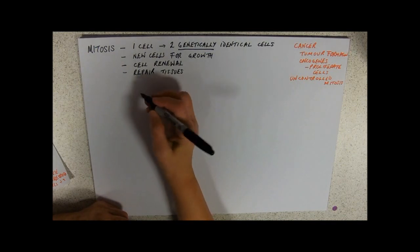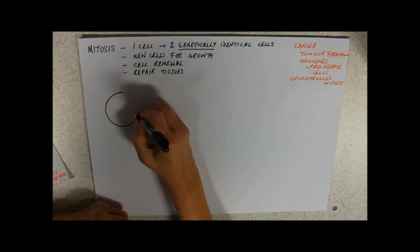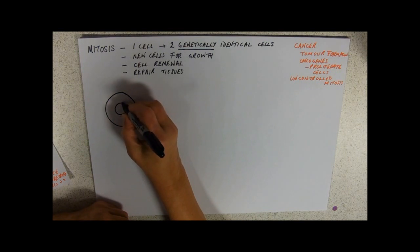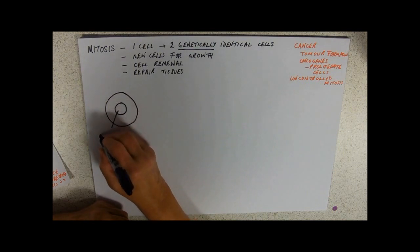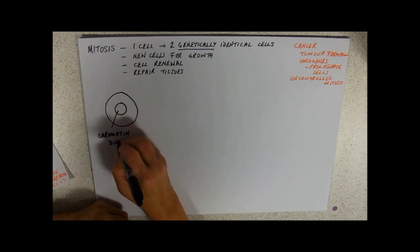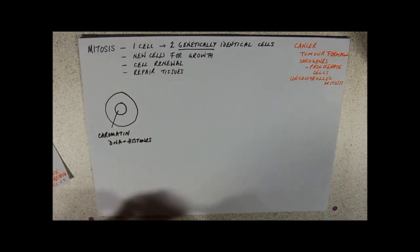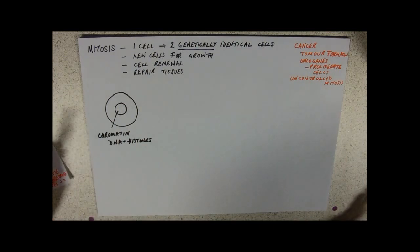So a cell doing its normal thing, making proteins, whatever it normally does, has a nucleus with chromatin in that we can't see. So chromatin, remember, is made of DNA plus histones. Now if you could see chromatin, it would look like beads wrapped around, beads of histones with the DNA sort of wrapped around it.